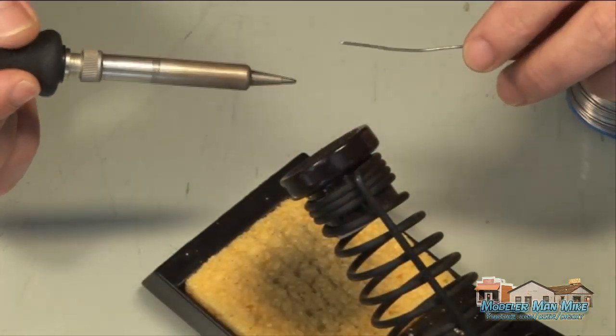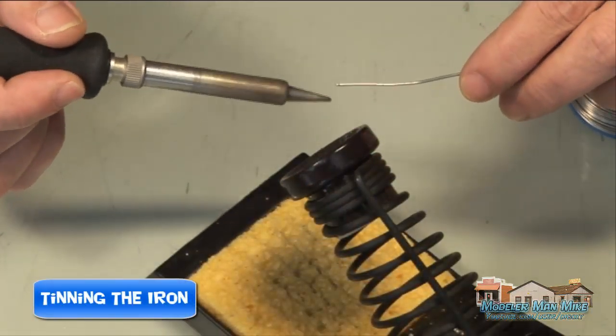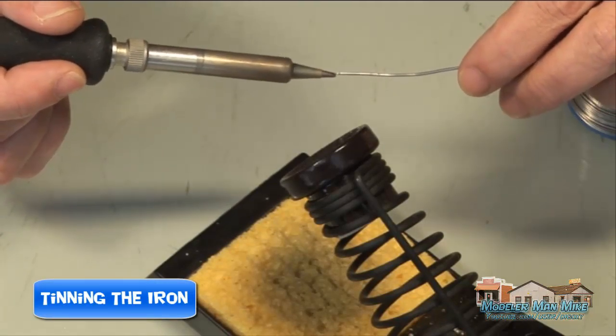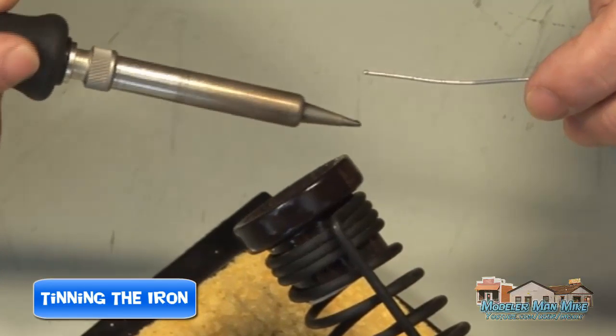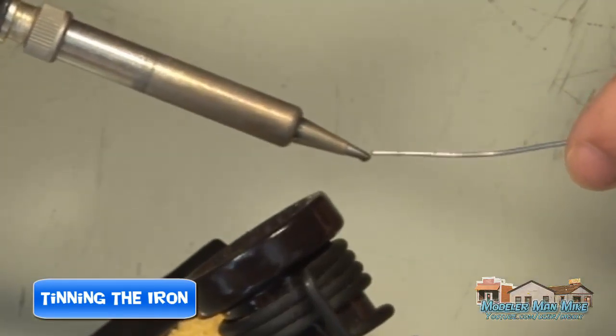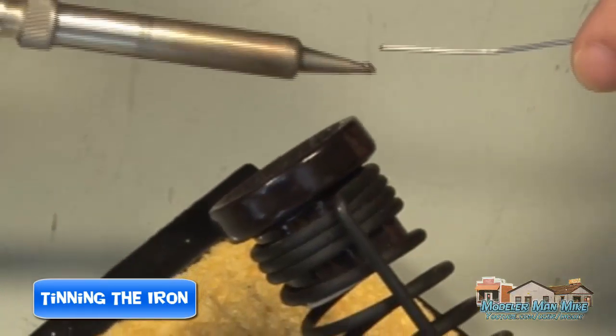Good maintenance on your iron is also important. This is called tinning the iron. You do this to keep your iron in good shape. It also gives it the ability to make good contact. So you just apply a little bit of solder to the tip.